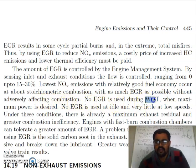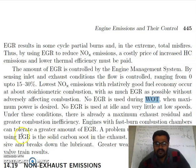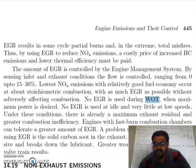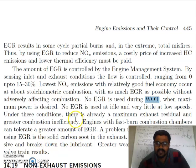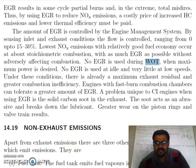No EGR is used during wide-open throttle when maximum power is desired. A problem unique to compression ignition engines when using EGR is the solid carbon soot present in the exhaust. The soot acts as an abrasive and breaks down the lubricant, resulting in greater wear of the piston rings and valve train. EGR may contain soot particles, and those particles will act as abrasive material in the next cycle, wearing down the lubricant.